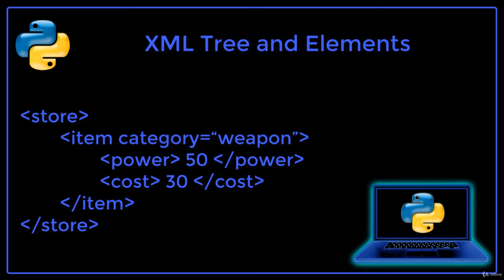Item is a child of store and has an attribute named category. The item element has two child elements: power and cost. Power has a text of 50, and cost has a text of 30.